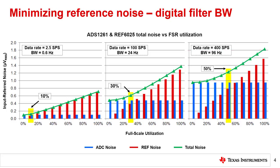You can also see that as the noise bandwidth increases from left to right, the total noise plot becomes linear at a higher full scale utilization.